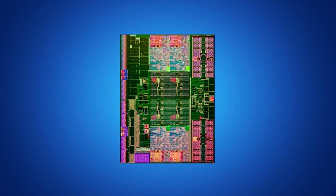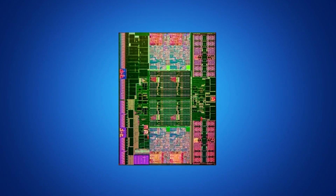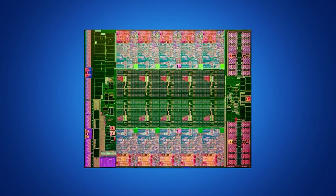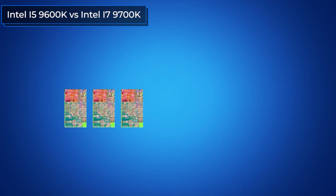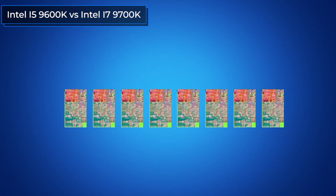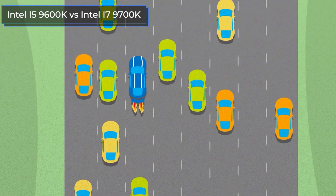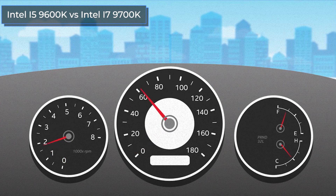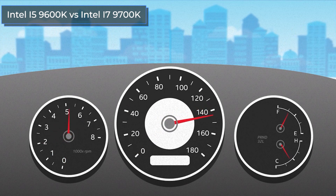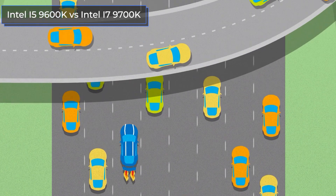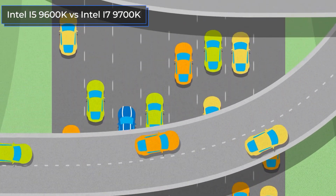Hello everyone, this is the Technodog channel. Today I'm going to review two processors from Intel: the i5-9600K and the i7-9700K. You will learn about the main parameters, their effectiveness and performance in various games. Both models are powerful, but from the price point of view, the i5-9600K is much cheaper.